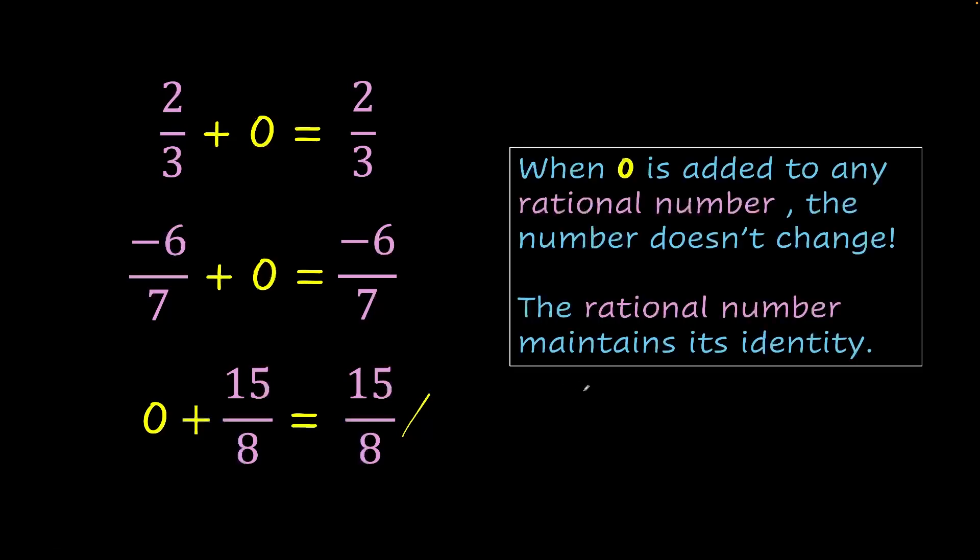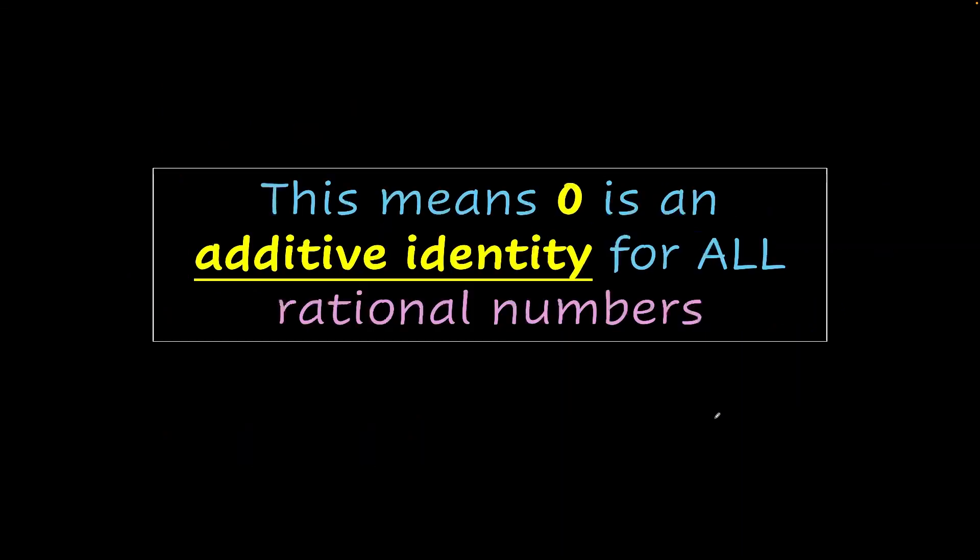So this clearly shows that when 0 is added to any rational number, the number doesn't change. The rational number maintains its identity. This means 0 is an additive identity for all rational numbers.